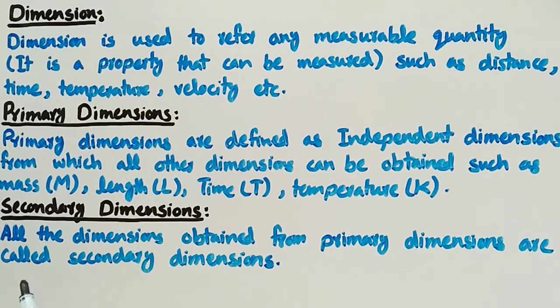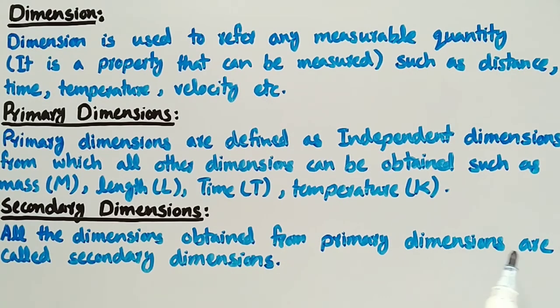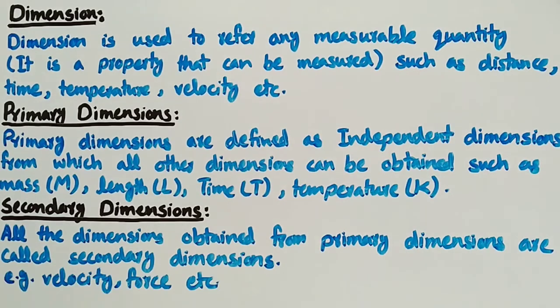All the dimensions obtained from primary dimensions are called secondary dimensions. For example, velocity, force, etc.